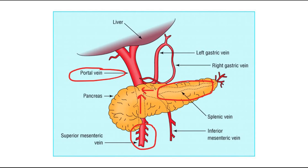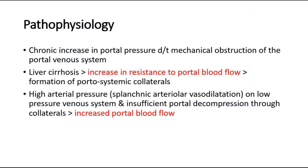For the pathophysiology, a chronic increase in portal pressure happens due to some mechanical obstruction of the portal venous system. It is almost an unavoidable consequence of liver cirrhosis, and there are also many complications which will be explained later. The pathophysiology mainly consists of two main causes: an increase in resistance to portal blood flow, and an increase in portal blood flow.